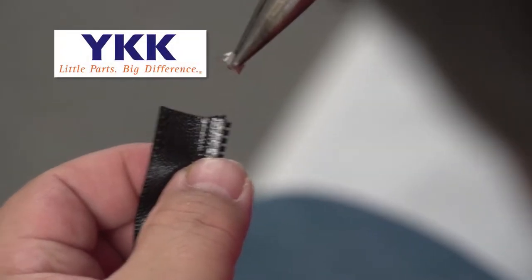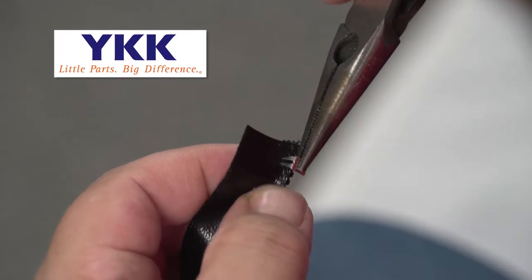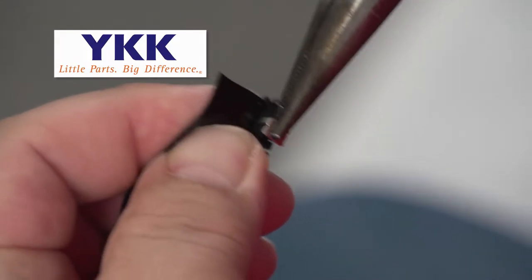We found that using needle nose pliers and holding the top stop as shown is the easiest way to install the stop on the end of the zipper.